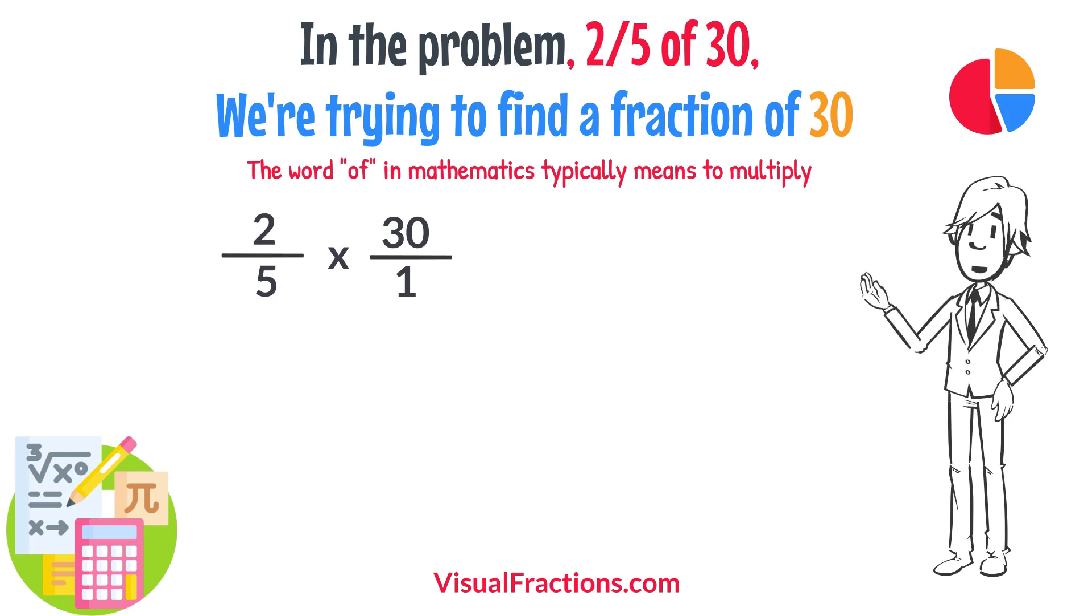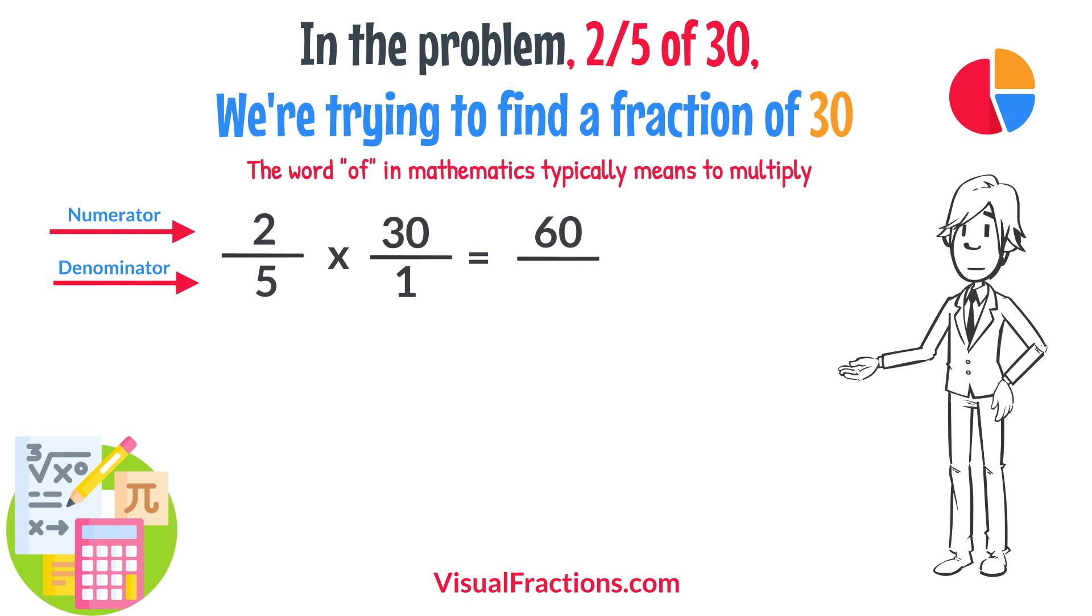First, multiply the numerators, 2 times 30 equals 60. Next, multiply the denominators, 1 times 5 equals 5.